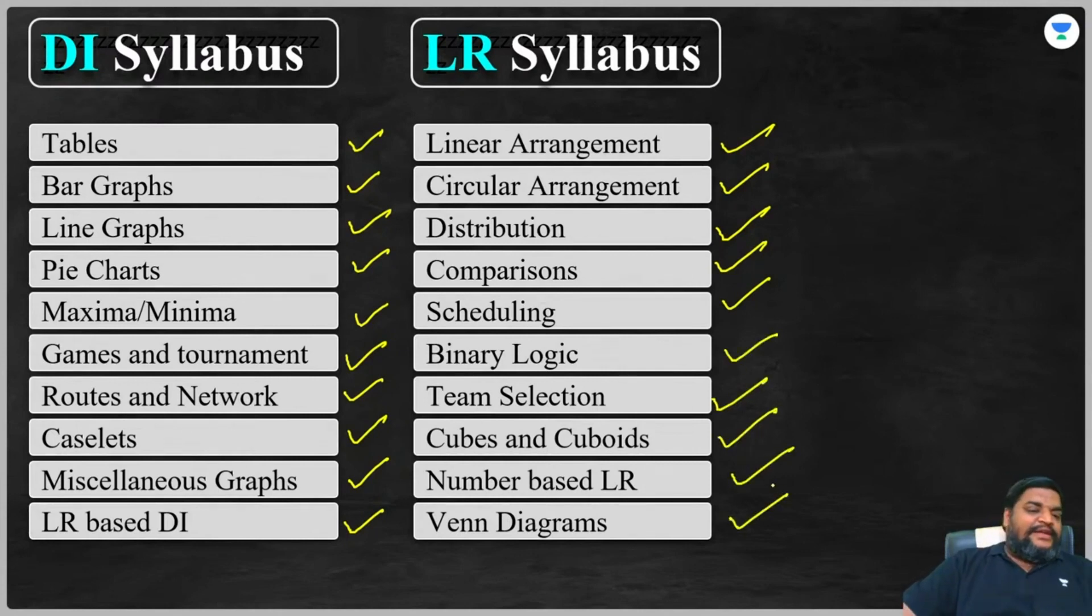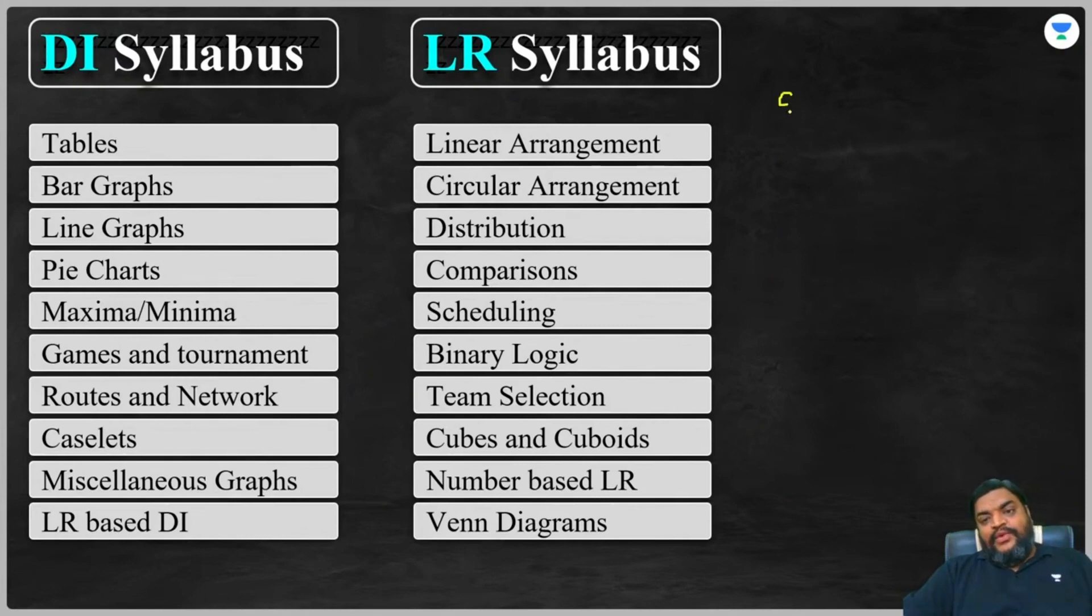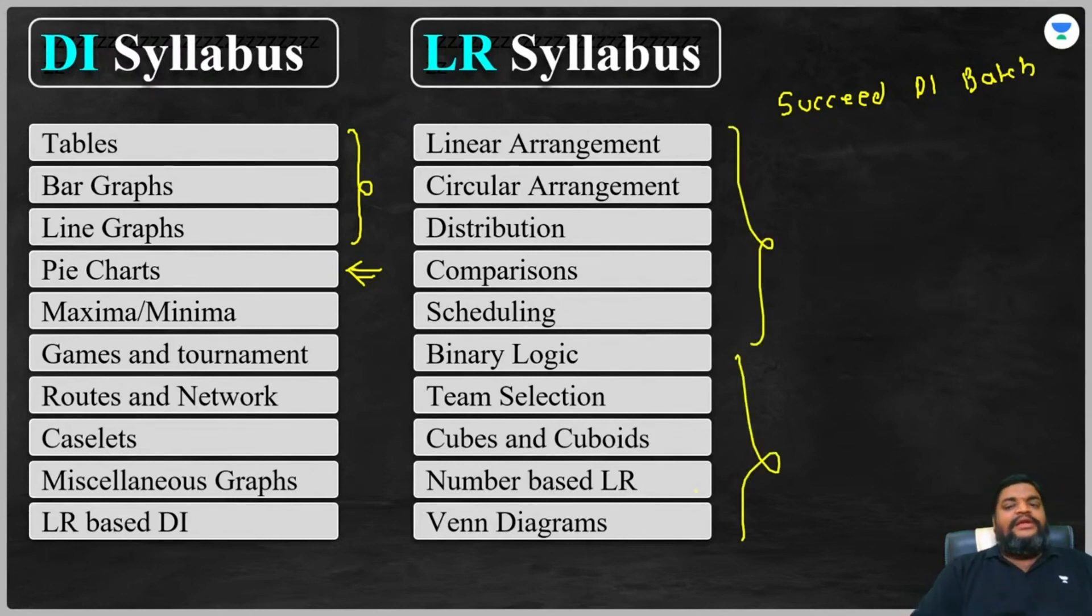If a list is not available somewhere, blindly follow Unacademy CAT channel. Right now I am running a Succeed DI batch. Do check on YouTube, do check on our channel. I am running a Succeed DI batch wherein I am covering entire DI and I have also covered first three topics of DI. Day after tomorrow, that is on 22nd, I will be starting with pie charts, a fresh topic. You guys can attend from pie charts as well, and you can cover tables, bar graph and line graphs from the recordings available. In the near future, will also come up with LR batch.